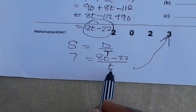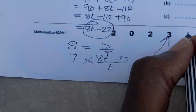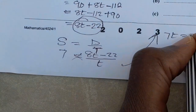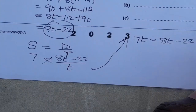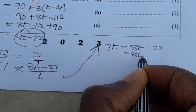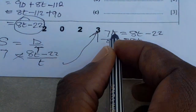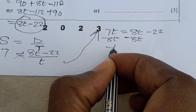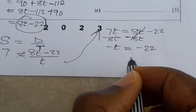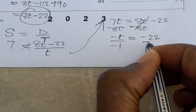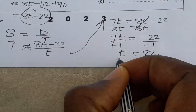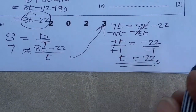Cross-multiplying: 7T equals 8T minus 22. Collecting like terms, we subtract 8T from both sides: negative T equals negative 22. Dividing both sides by negative 1, T equals 22 seconds. So the value of T is 22 seconds.